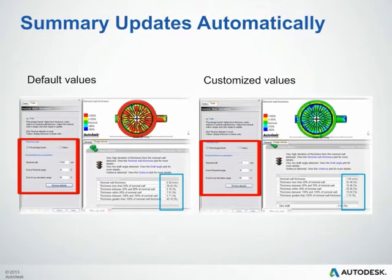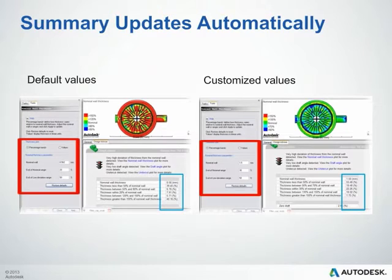In regards to the summary table, we do have default values in there for you, but if you wish to customize these to a different nominal wall or a different range — maybe a tighter tolerance or a looser tolerance within your nominal wall — you do have the option to adjust these settings.